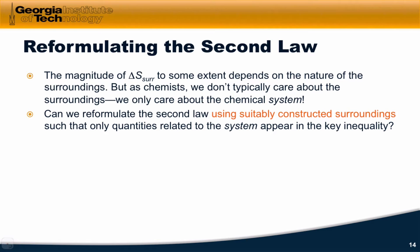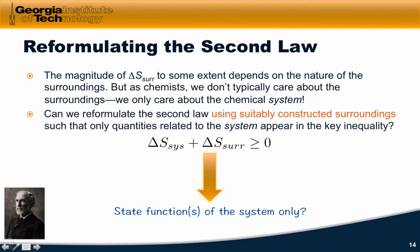Is it possible to do this using suitably constructed surroundings? Imagine we have free reign to imagine the surroundings however we want. Can we do that such that only state functions related to the system appear in the inequality of the second law? The answer is that we can, and this was done by Josiah Willard Gibbs. The state function that pops out of this bears his name today.